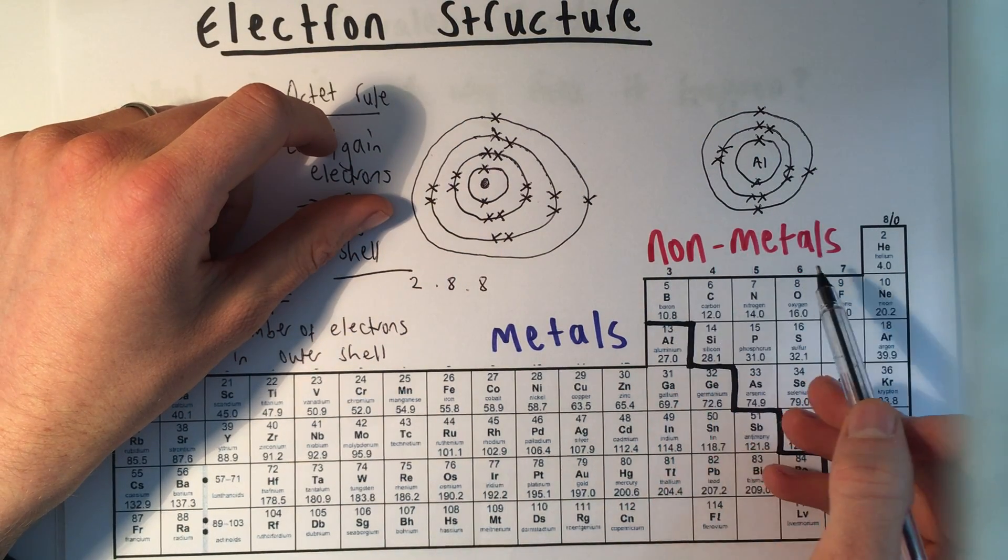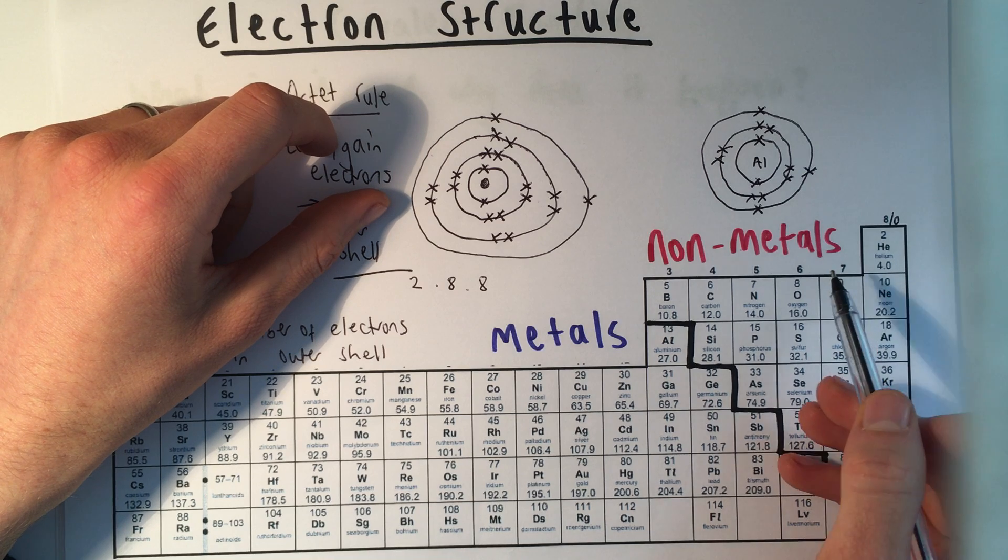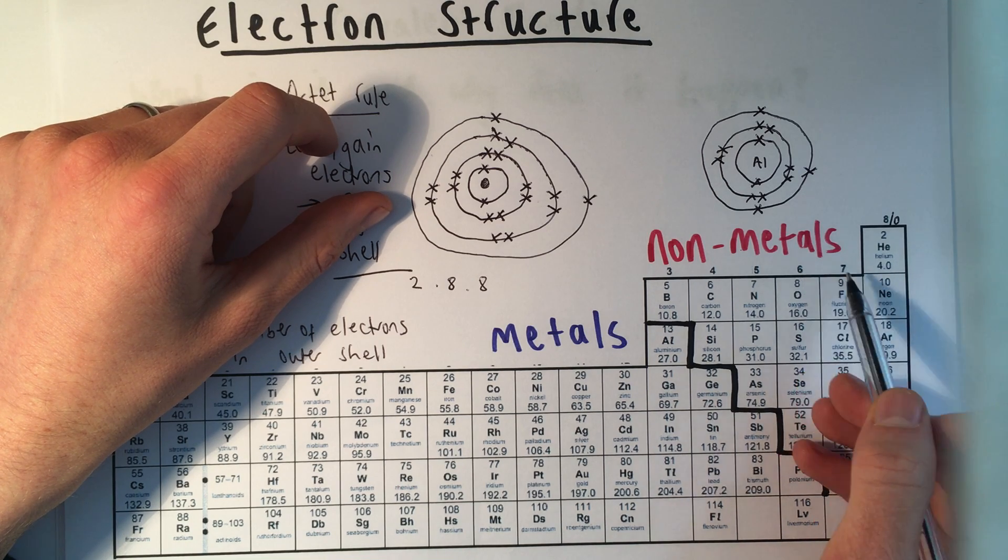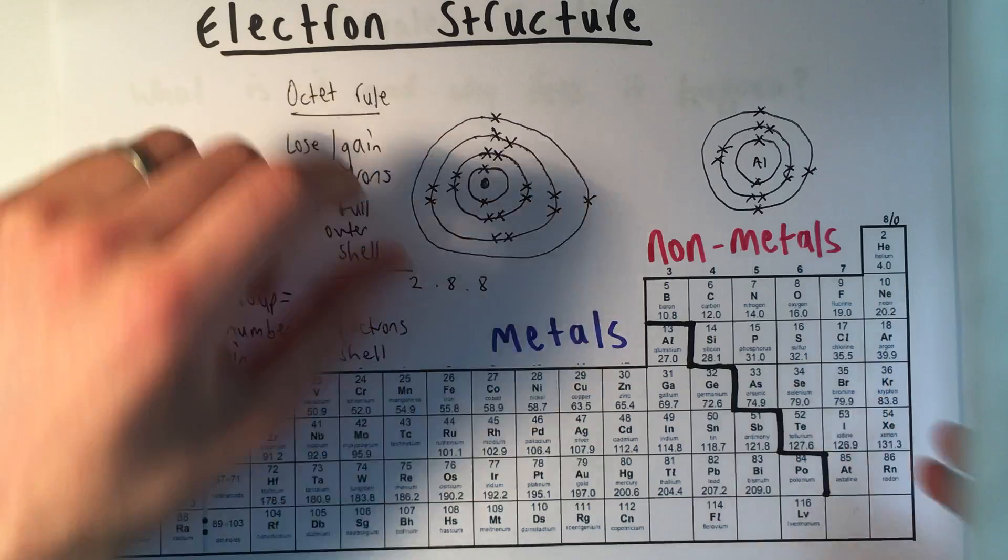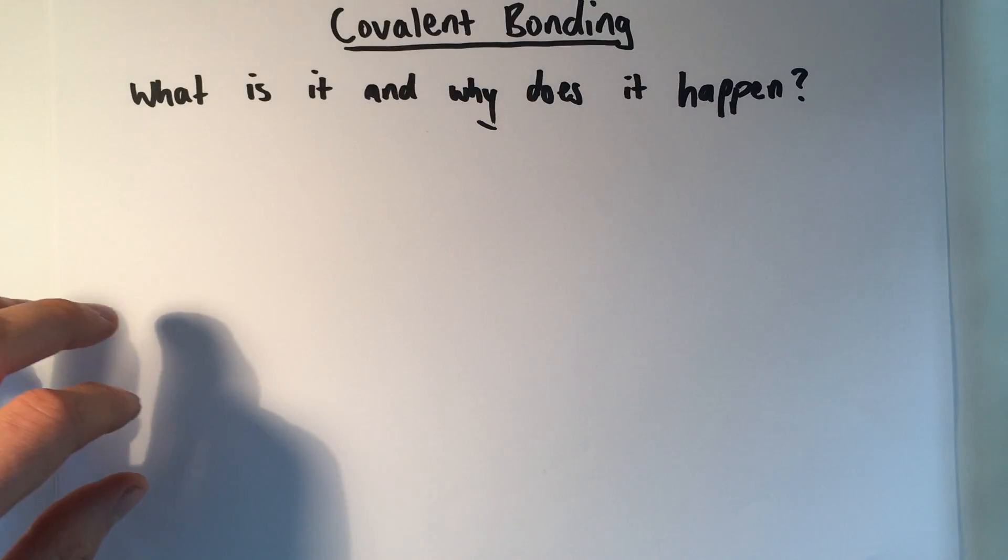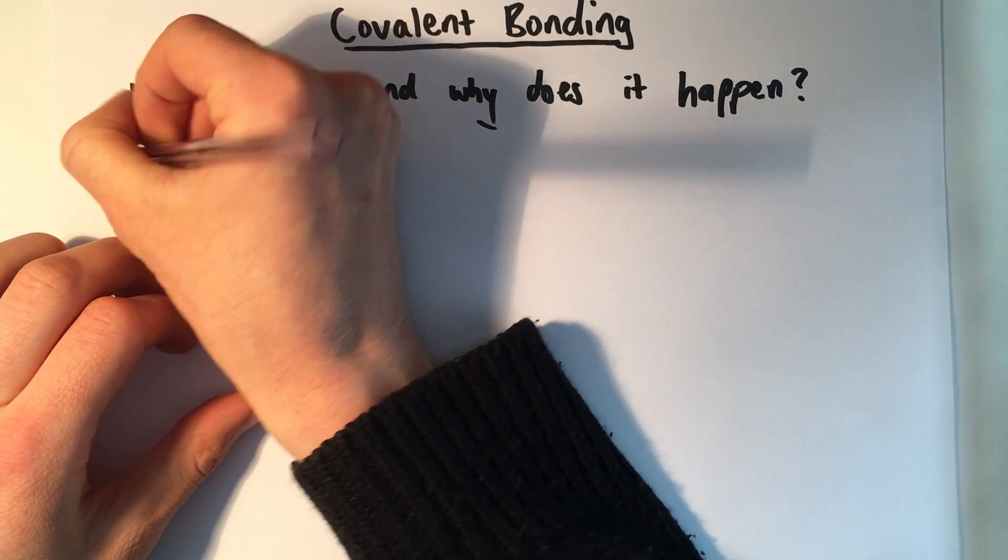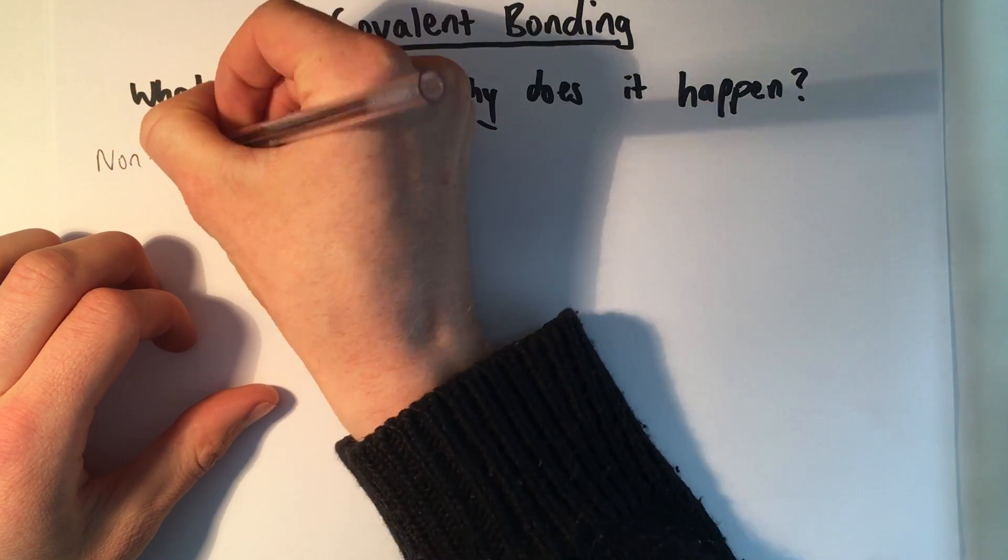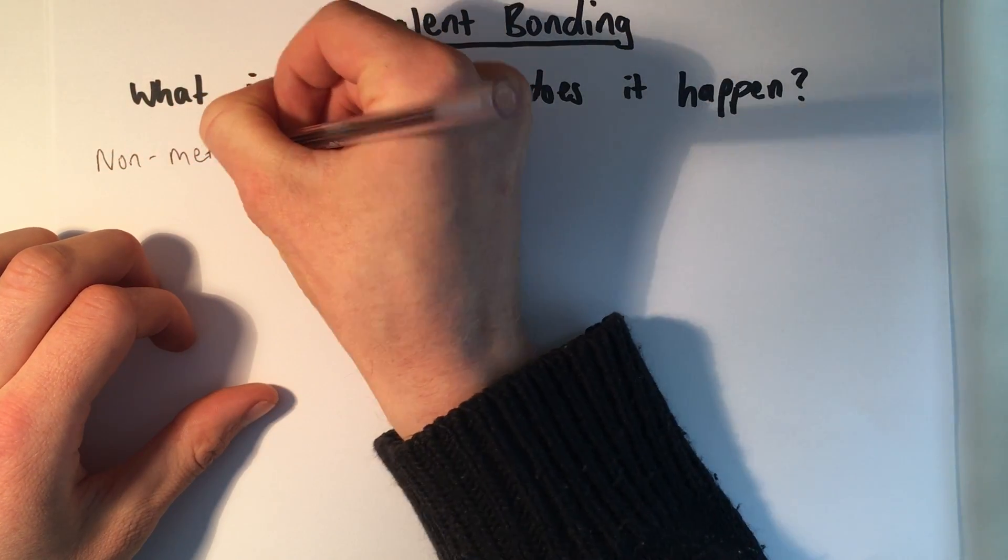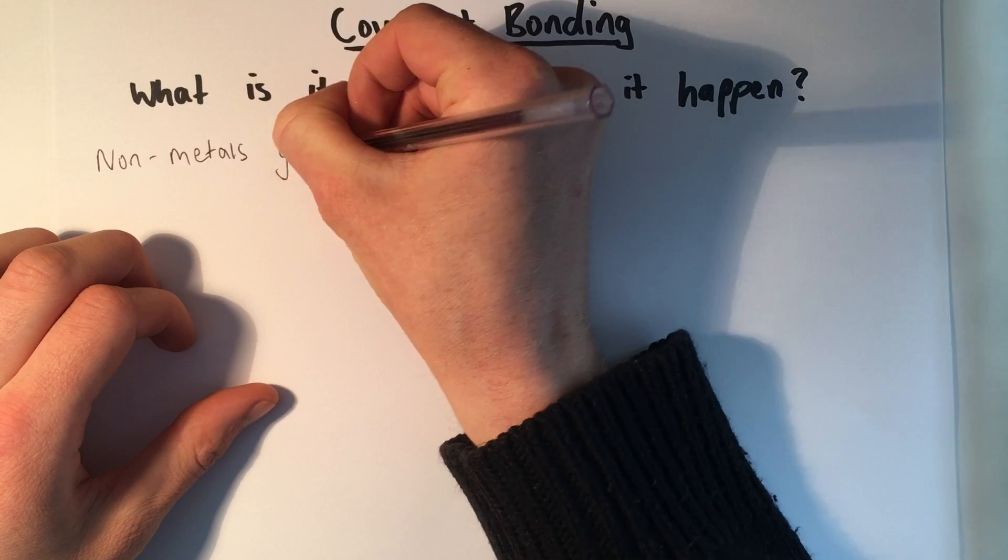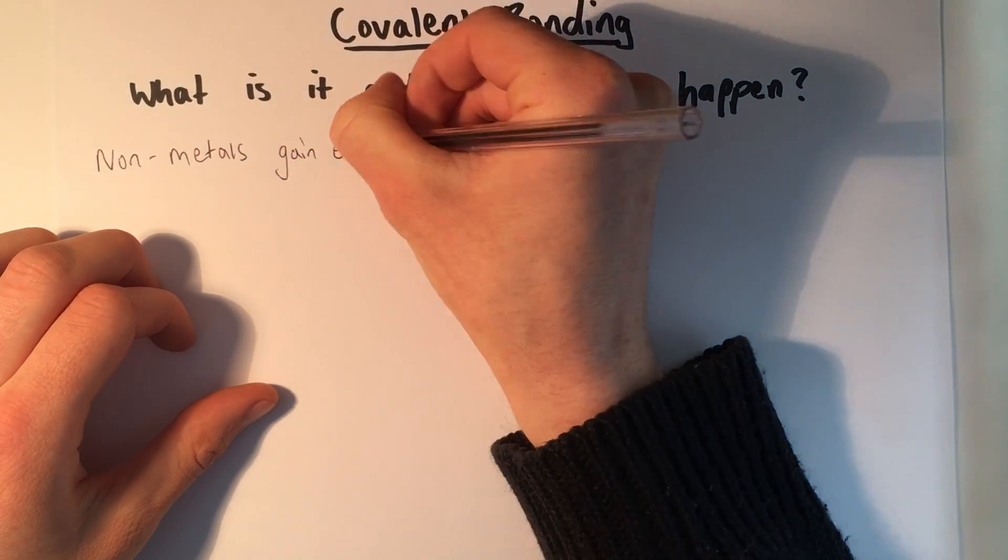Non-metal atoms tend to want to gain electrons because that's their easiest way of getting up to a full outer shell. So that's what's going to happen. It's non-metals and each atom wants to gain electrons.